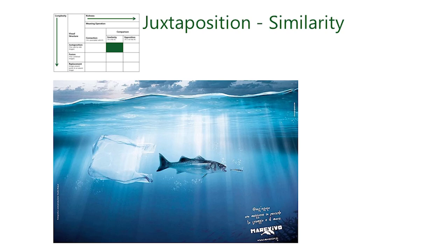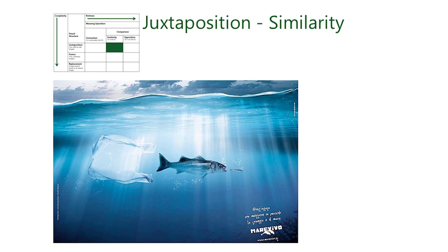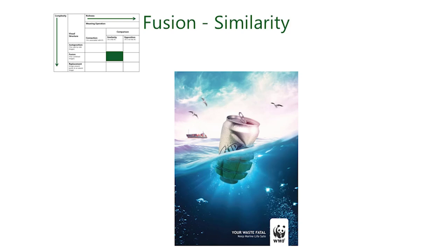Here we see a visual rhetorical figure which juxtaposes elements — it shows two fishes and a plastic bag, and the way the fishes and the plastic bag are arranged side by side resembles a food chain, with the plastic bag being the biggest predator. The meaning operation here is what Phillips and McQuarrie termed similarity: the plastic bag is like a predator. In this ad, a drink can is fused with a grenade. The ad conveys that throwing away waste kills thousands of marine creatures. Accordingly, the drink can and the grenade are linked by similarity — the image suggests that the drink can is like a grenade.